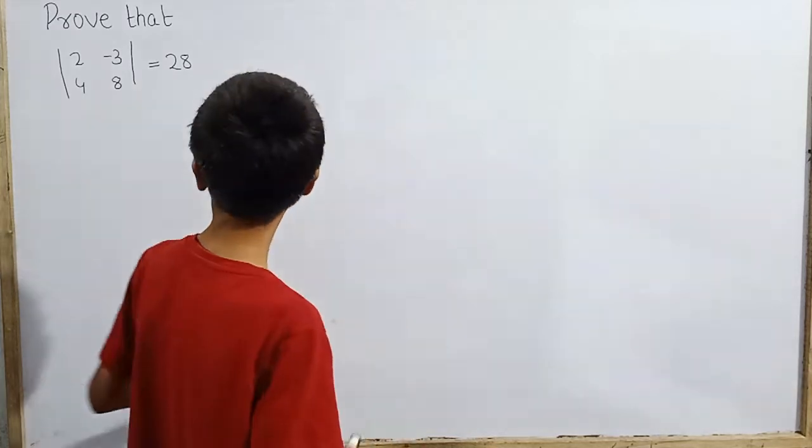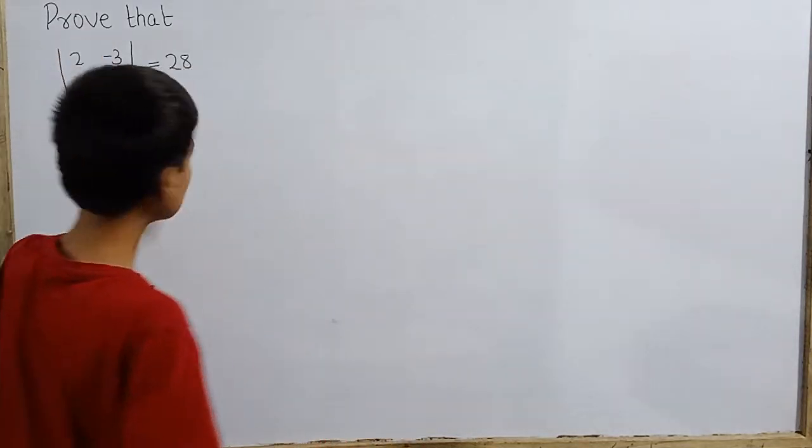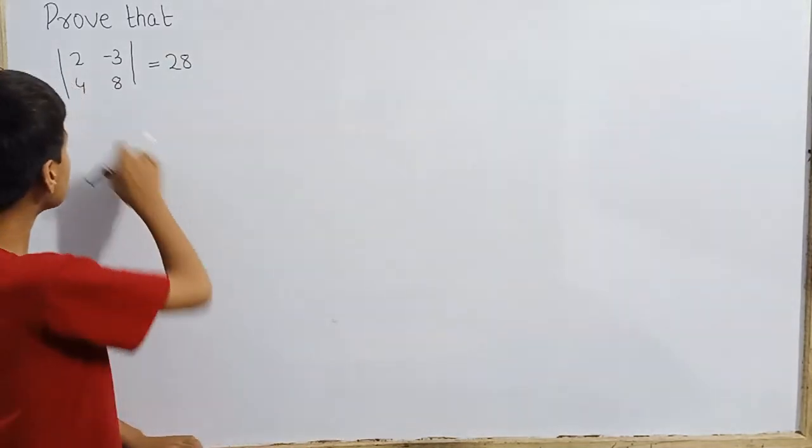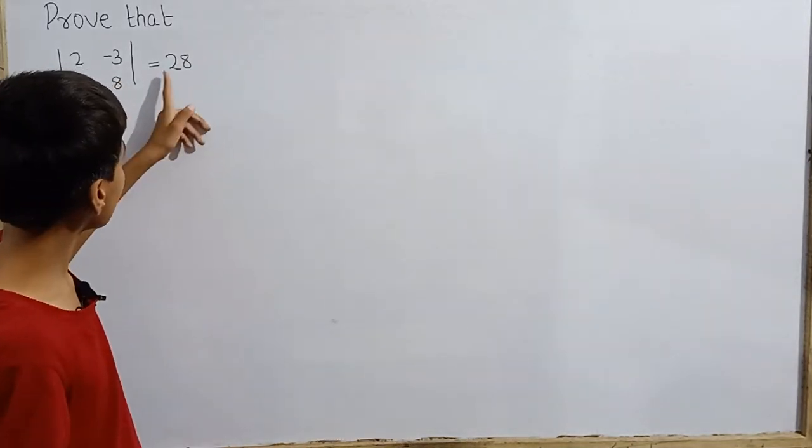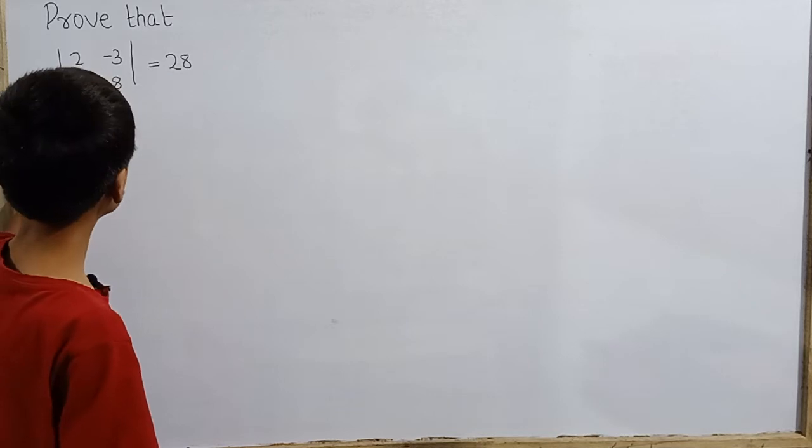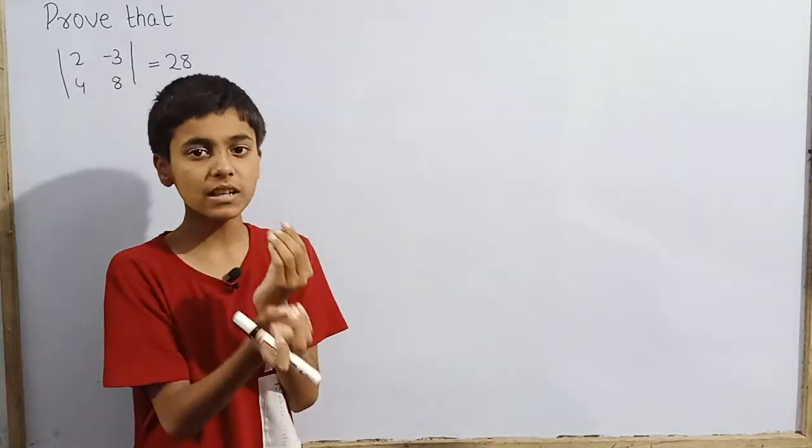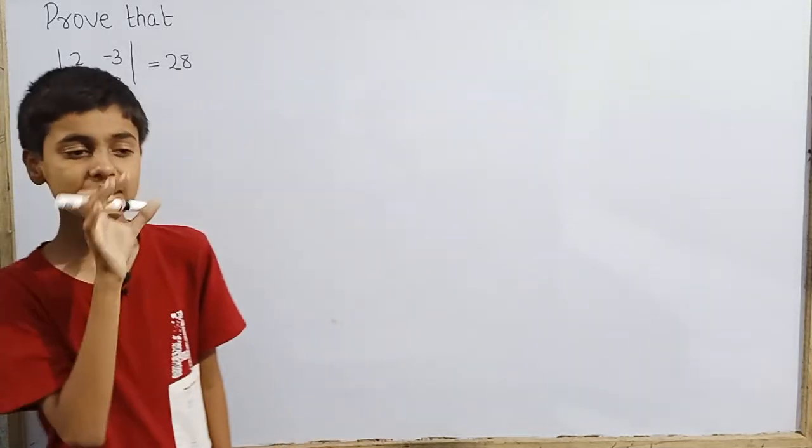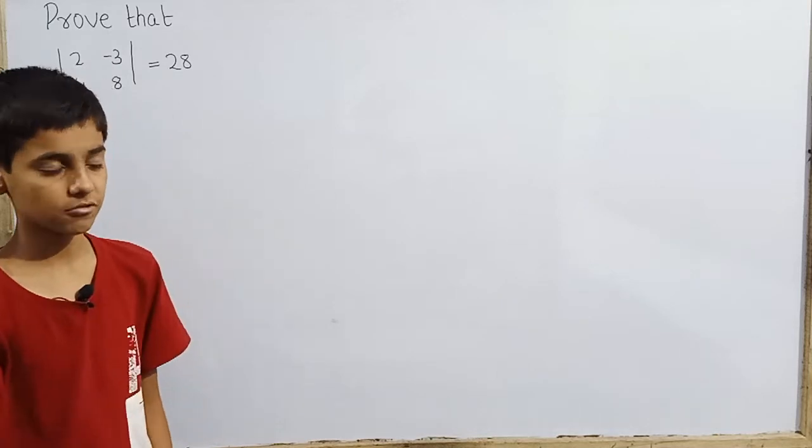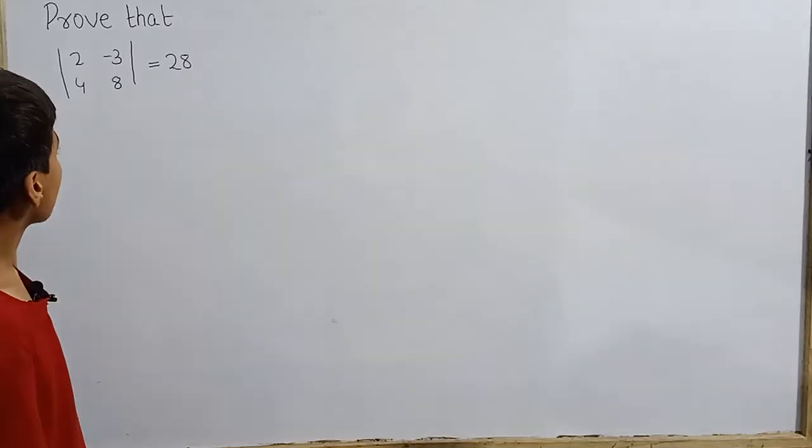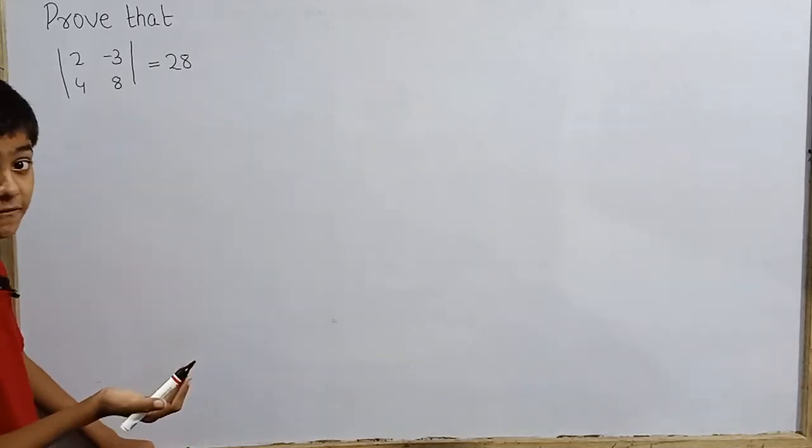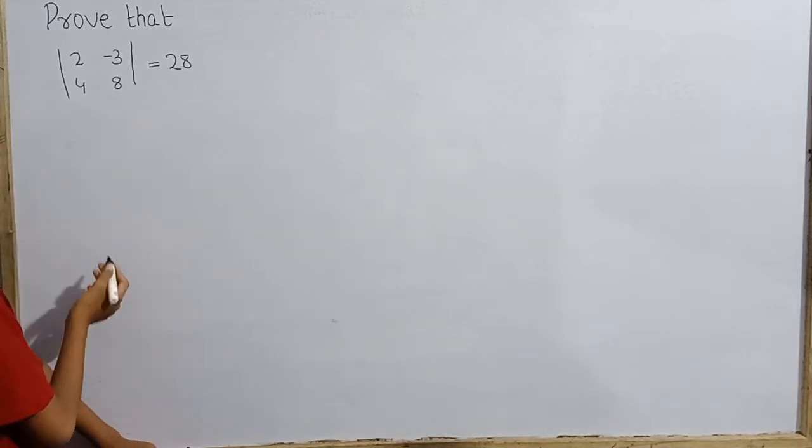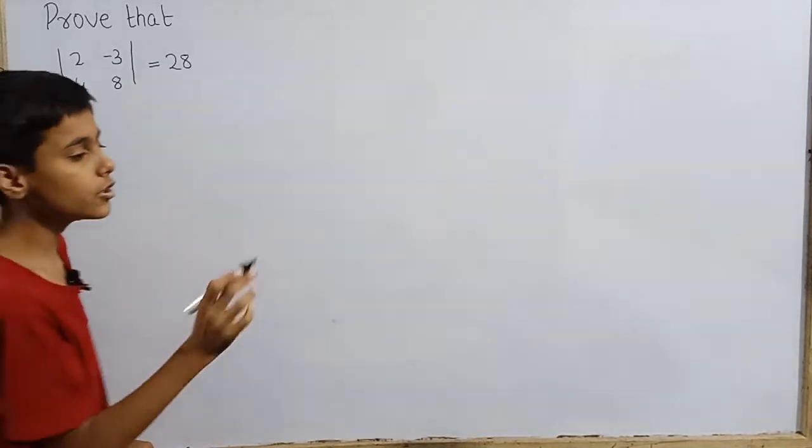So I picked the most easy one and this is to prove - here's a determinant, we have to prove that its value is 28. This is a 2-by-2. We have to prove that its value when we solve this equation, we get 28. So that is a nice, easy question.